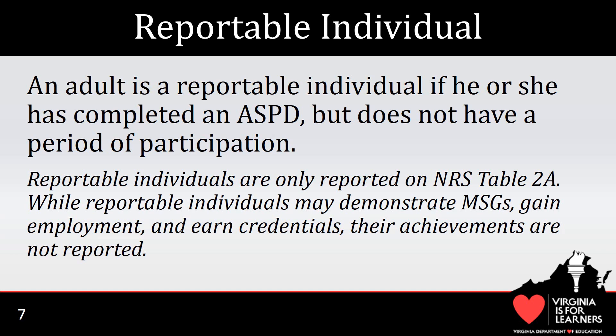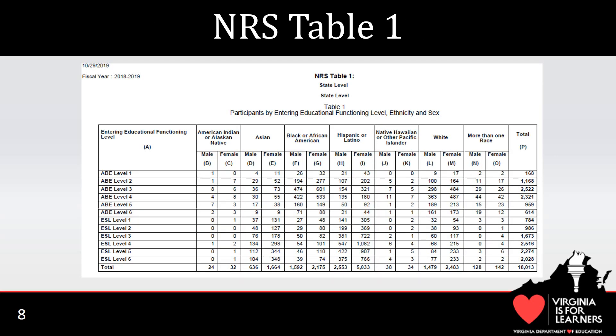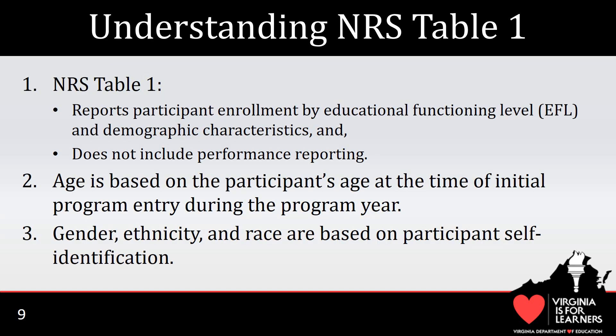Reportable individuals are reported on NRS Table 2A only. This slide contains a snapshot of state-level data reported on NRS Table 1, submitted as part of the state's annual reporting for 2018-19. As you can see, the table aggregates participant race, ethnicity, and gender information according to EFL, or educational functioning level. While NRS Table 1 provides enrollment information based on race, ethnicity, gender, and entering EFL, there is information you should be aware of that will help you understand how the numbers are provided.